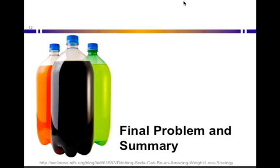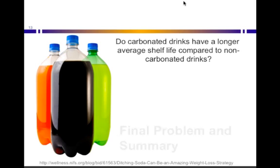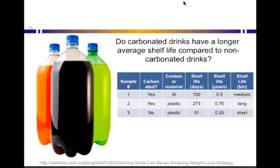Let me give you one more example. This problem deals with carbonated drinks, and we want to know: do carbonated drinks have a longer average shelf life compared to non-carbonated drinks? We have data including whether drinks are carbonated or not, the container material, shelf life in days, shelf life in years, and whether the shelf life is short, medium, or long. The question is: what type of scale is each variable in this table? We'll come back to the answers at the end — take a minute to think about it.